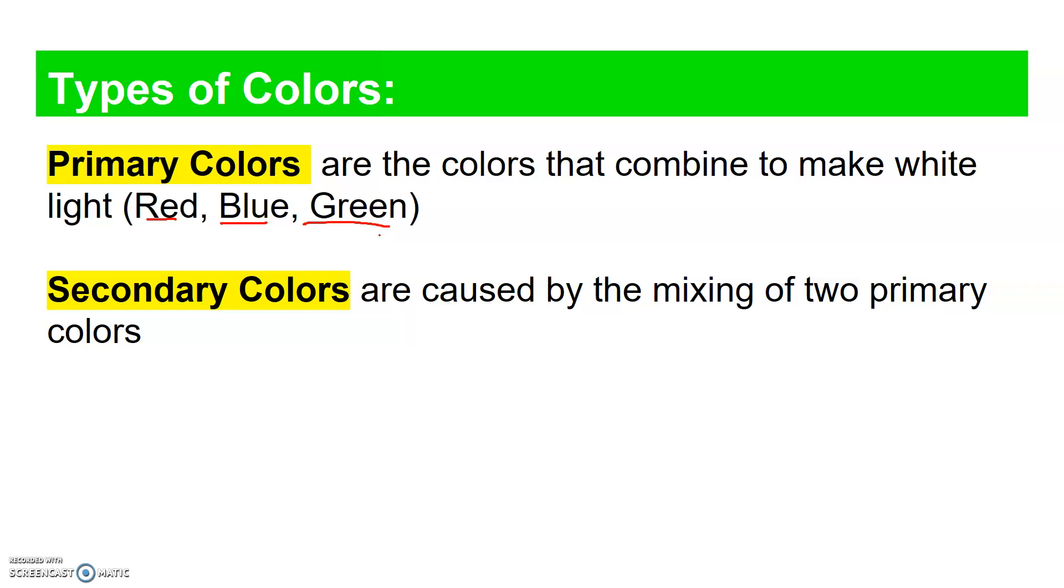Secondary colors are caused by the mixing of two primary colors. So a secondary color might be red and blue, and that will give you, for example, magenta. Blue and green gives cyan. And red and green gives yellow.